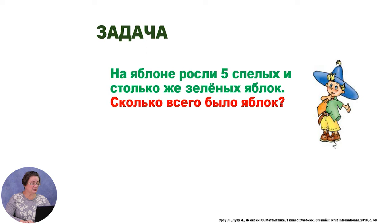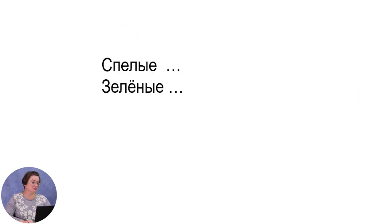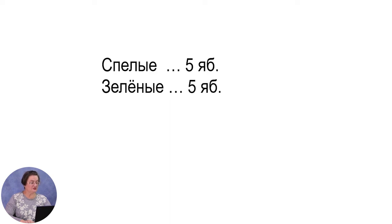На яблоне росли 5 спелых яблок и столько же зелёных яблок. Условие нашли и исправили. Вопрос задачи: «Сколько всего было яблок?» Главные слова в задаче — «спелые» и «зелёные». Запишем их в столбик. Знаем, сколько спелых яблок — 5. В строке «спелые» после трёх точек пишем 5 яблок. Сколько зелёных? Сказано «столько же» — значит, тоже 5. В строке «зелёные» пишем 5 яблок. Надо узнать, сколько всего яблок — показываем фигурной скобкой и пишем вопросительный знак.